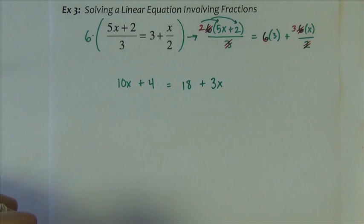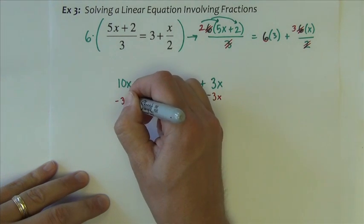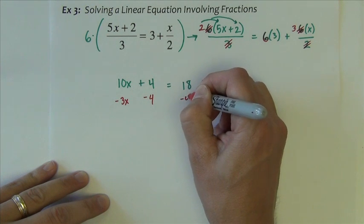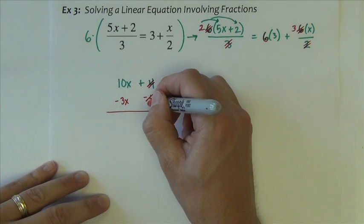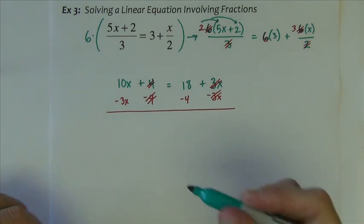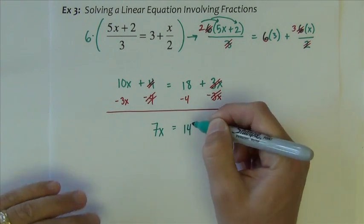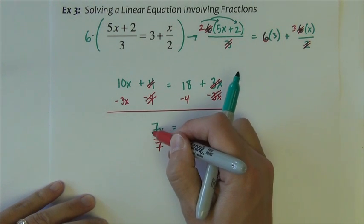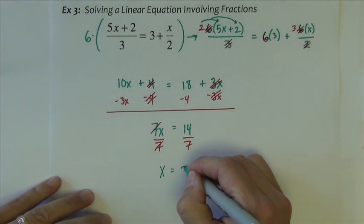A much simpler looking equation to solve now, just by utilizing that least common denominator. I'm going to move my x's over to the left, I'm going to move my non-x's over to the right. So the x's cancel there, the 4's cancel here, and the result is 7x equals 14, divide both sides by 7, giving me x equals 2.